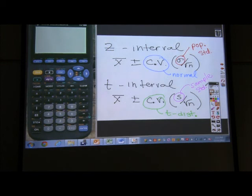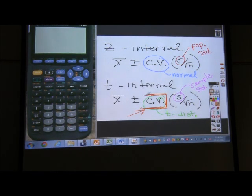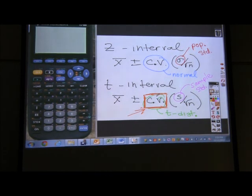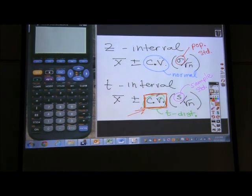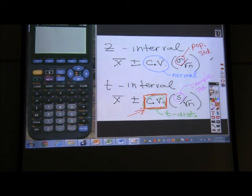So the big question becomes, how do we find these critical values? That becomes our goal. How do we find these critical values? Any questions on this part so far?